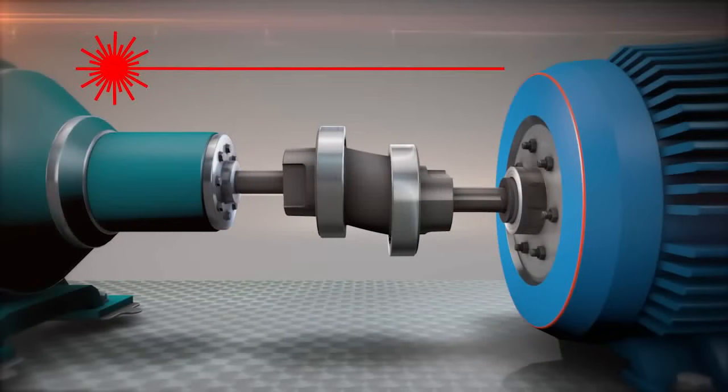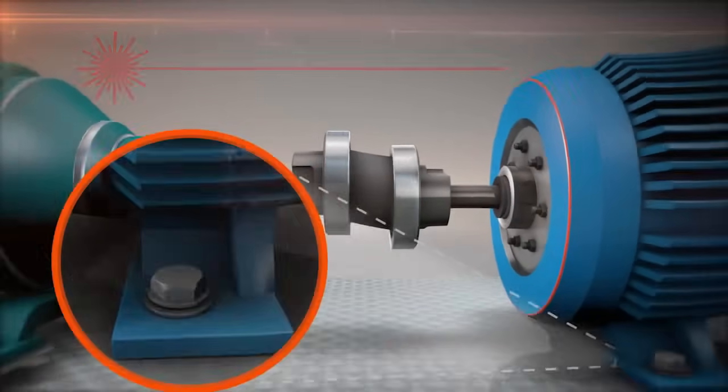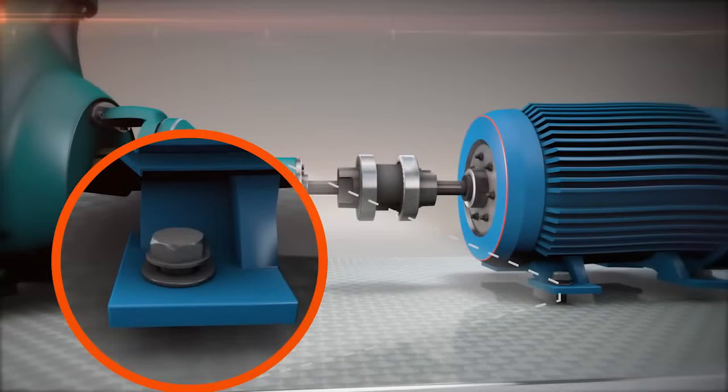To determine which type of soft foot a machine has, we can use laser alignment systems to measure the amount of movement a soft foot produces at the shaft center line when loosening or tightening a foot.